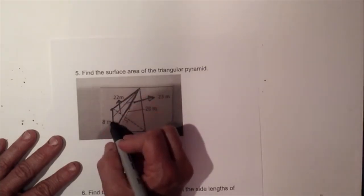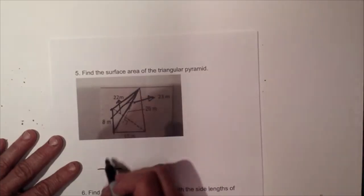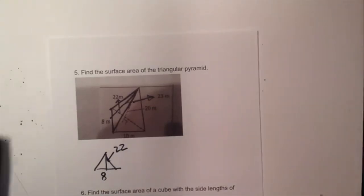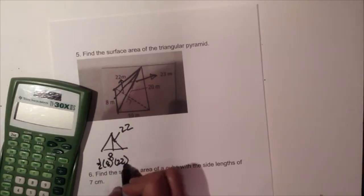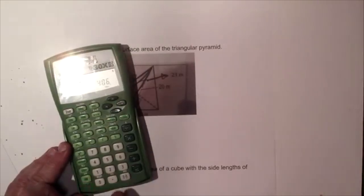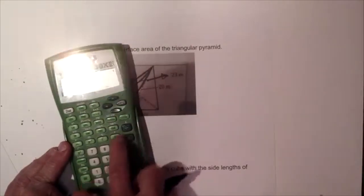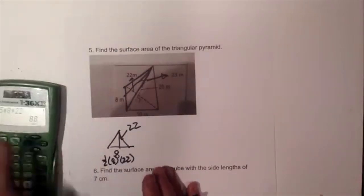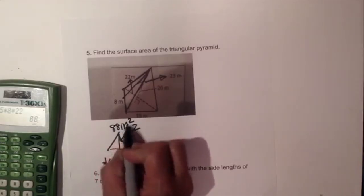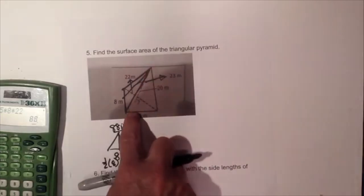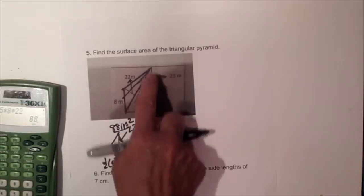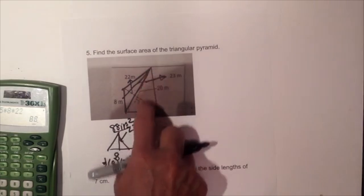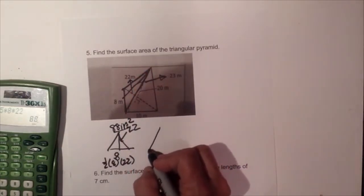The first lateral face has a base of 8 and a height of 22. Using one-half base times height: 0.5 times 8 times 22 gives me 88 square inches for that first face. The second lateral face has a side length of 23 and a base of 10, but we don't know the height, so we'll have to work a bit harder.